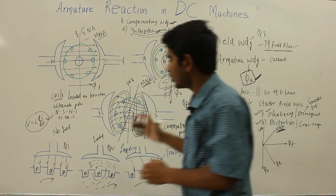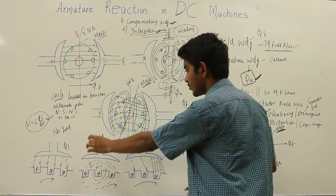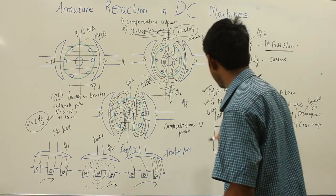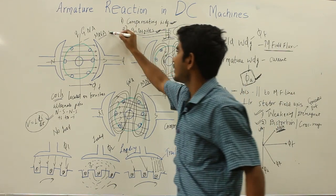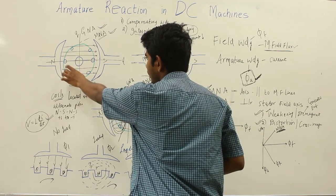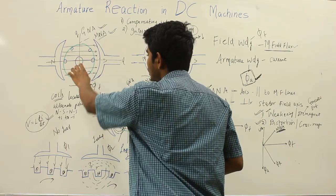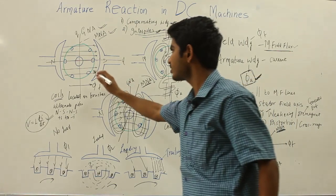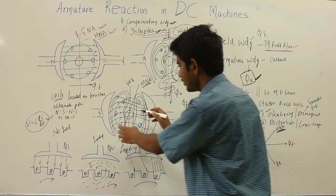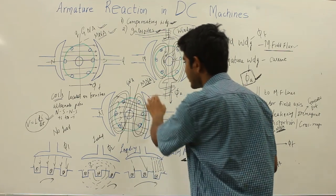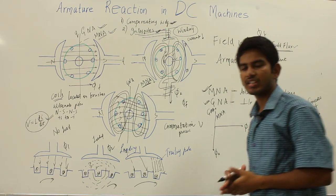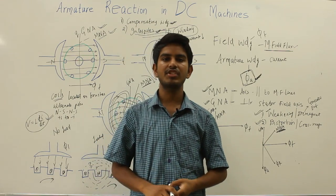In summary, we have seen armature reaction under no-load and loaded conditions, the superimposition of fluxes, the unequal field distribution, the magnetic neutral axis and geometrical neutral axis, how field flux lines move uniformly and symmetrically to the polar axis when the field winding is energized, how armature flux affects the main field flux, and how the magnetic neutral axis gets shifted due to armature reaction in DC machines.